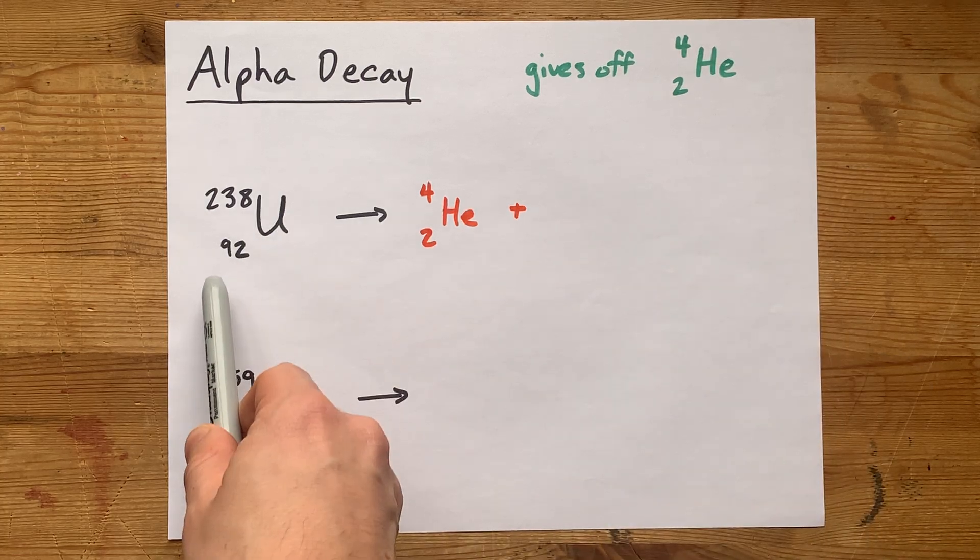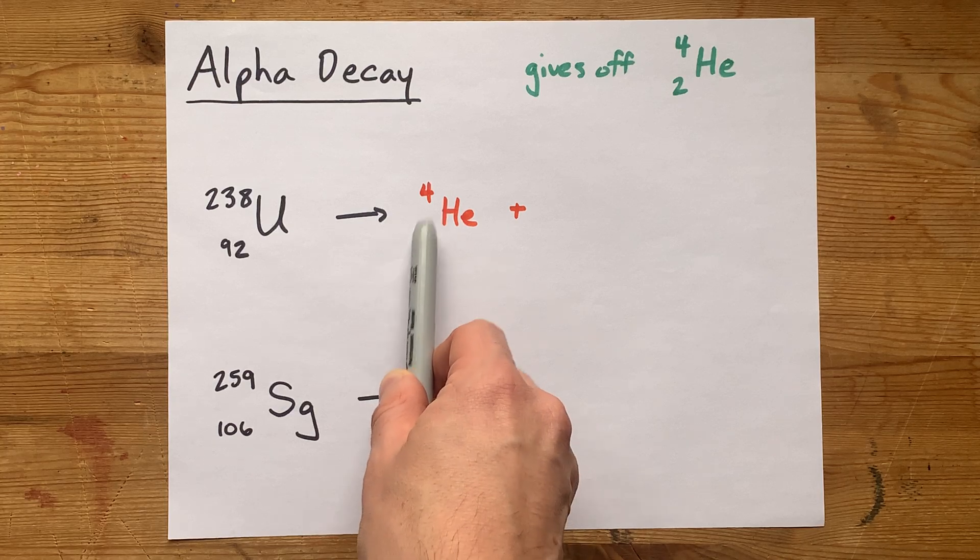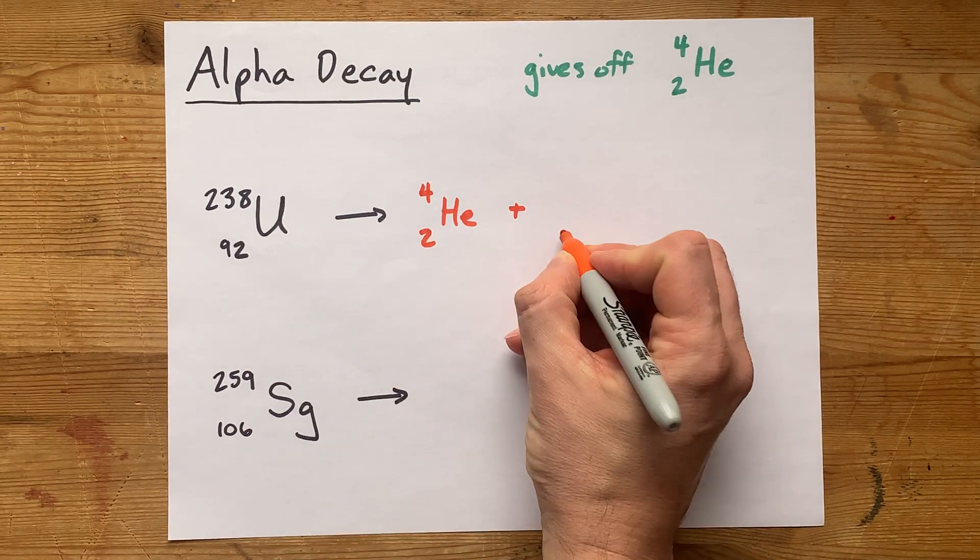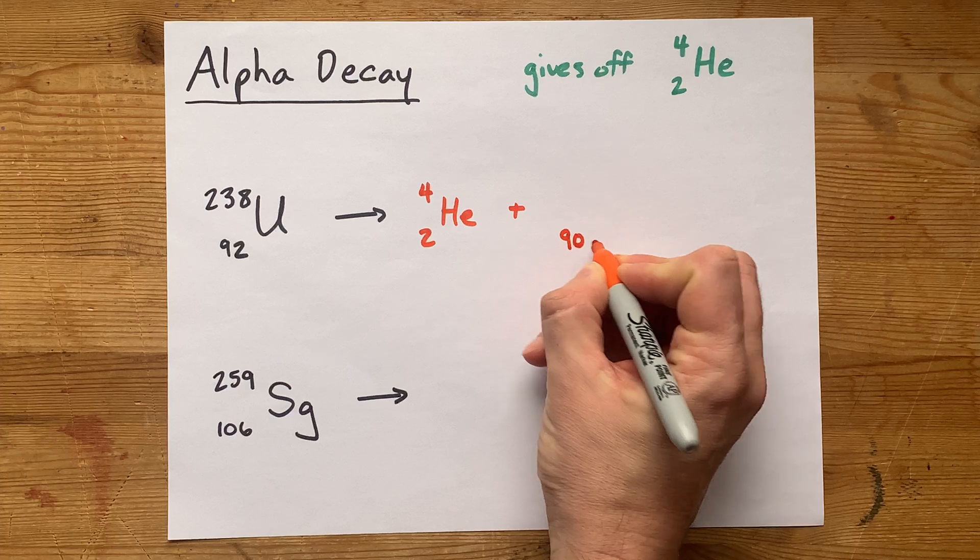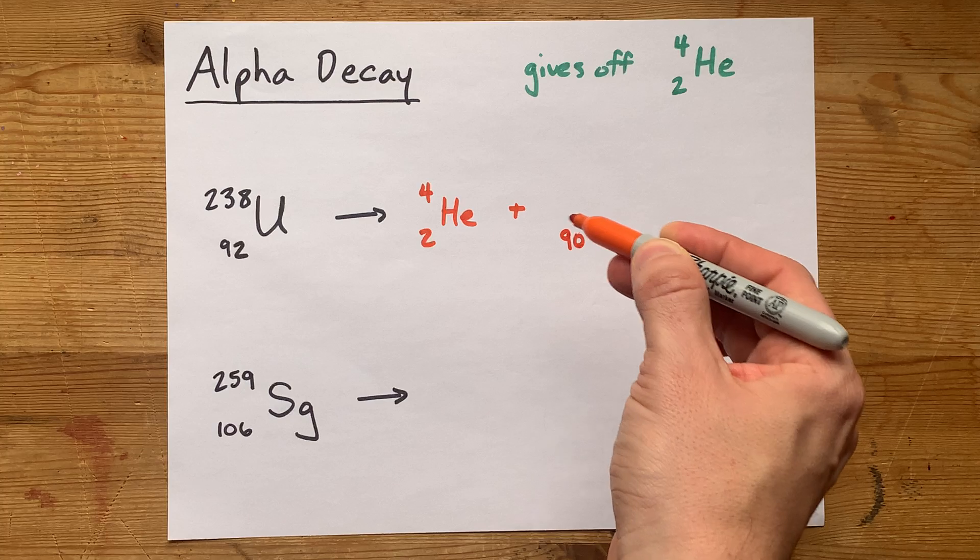Originally this uranium had 92 protons, and it broke apart to give you something with two protons, so the leftover amount is 90. That's the atomic number of whatever particle is also produced.